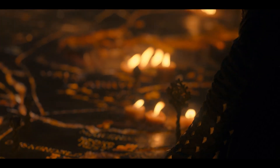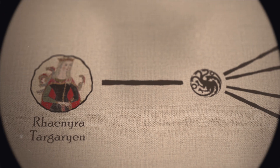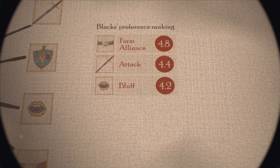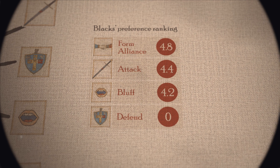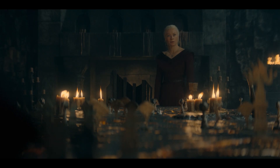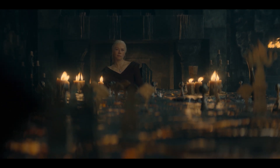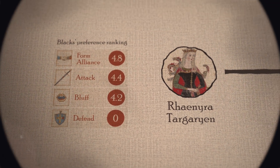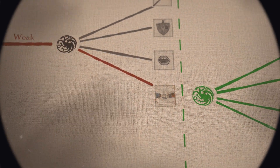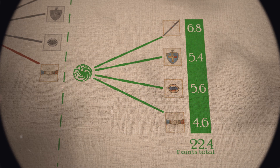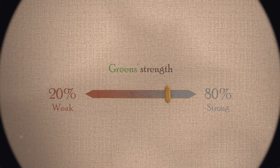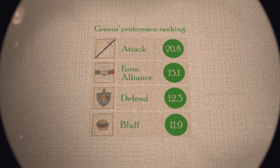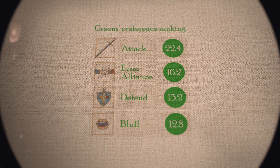In the show, blacks did precisely that. They were weaker than the greens, and the strategy with the highest expected utility was to form an alliance. We ran the numbers and the preference ranking for the blacks was: form alliance, attack, bluff, defend. Note that the expected utility of the strategies — except defend — are very close, so it's understandable that Rhaenyra was hesitant. The strategy of forming an alliance was the winning one, but the margin was small. We also calculated the expected utility for the greens: if the blacks are weak and form an alliance, the greens should expect 22.4 points of gain. The greens' numbers are higher because they are stronger. According to our model, the preference ranking for the greens goes: attack, form alliance, defend, bluff.